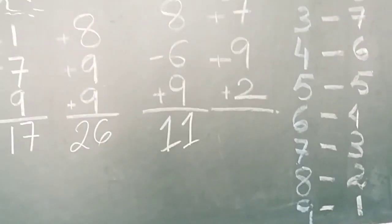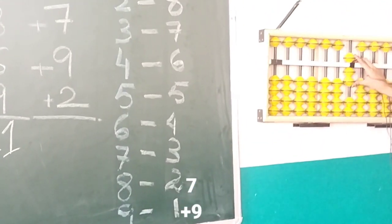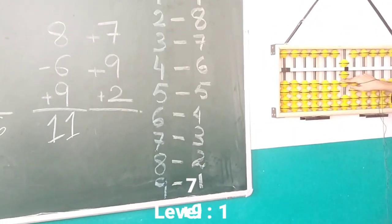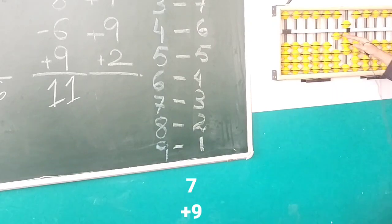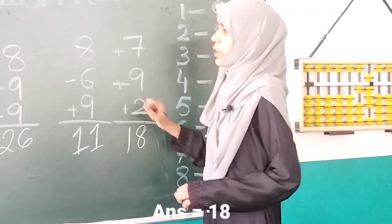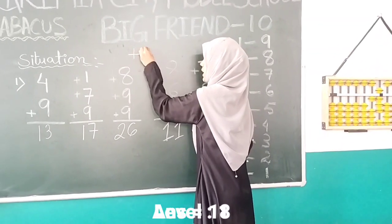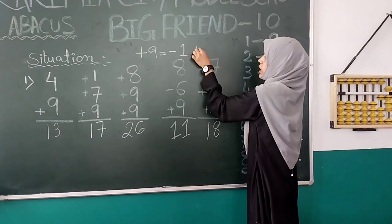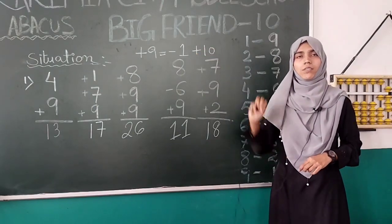Our fifth situation is seven plus nine plus two. We do seven with pinch, and we don't have enough beads for nine, so we take help of Big Friend. Number one will go and Big Friend comes to help. Then number two comes, and our answer is eighteen. So, from all situations, the formula for plus nine is: minus one plus ten.